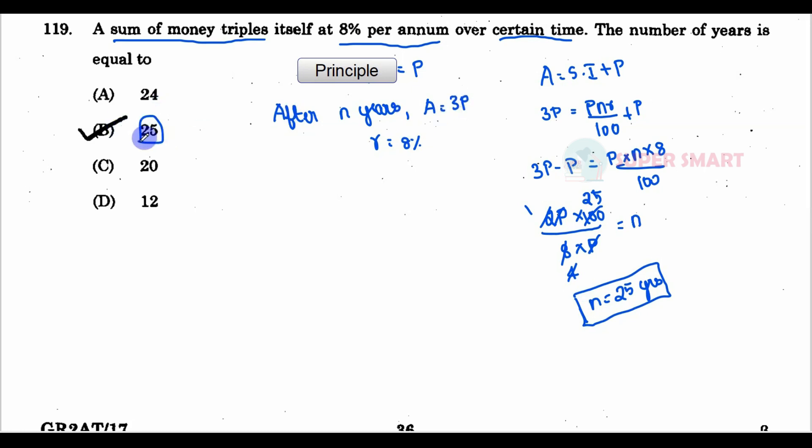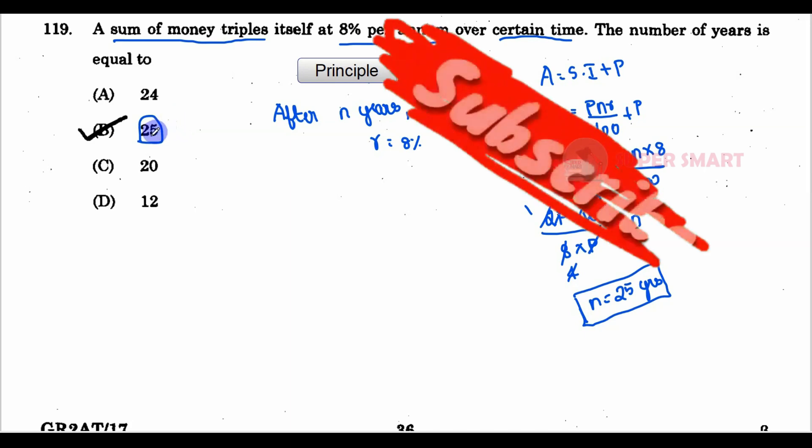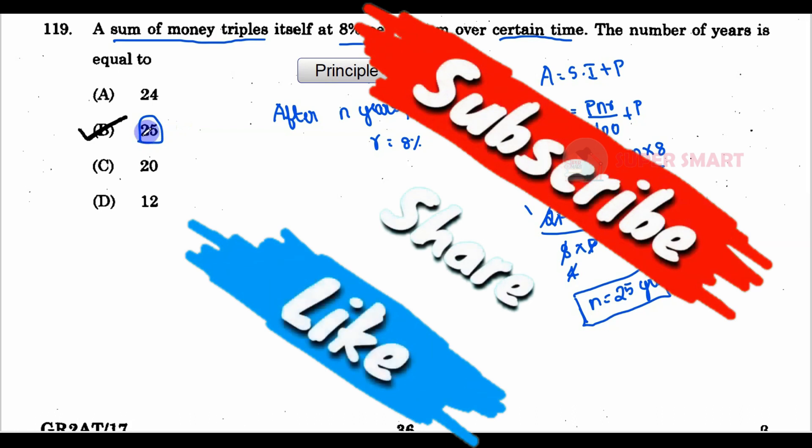So option B is correct, 25 years. If you liked this solution, please like, share, and subscribe to this channel. Thank you.